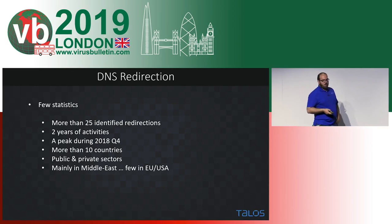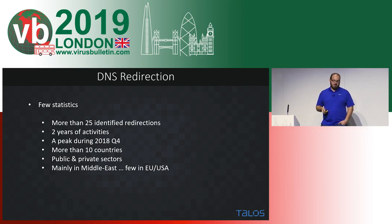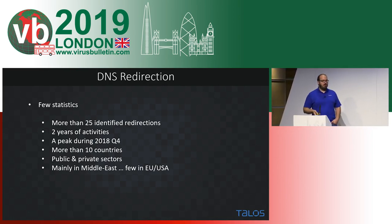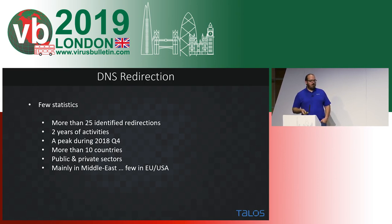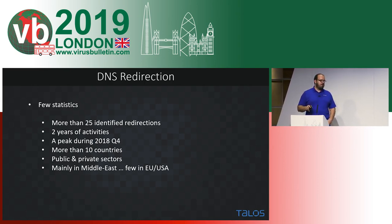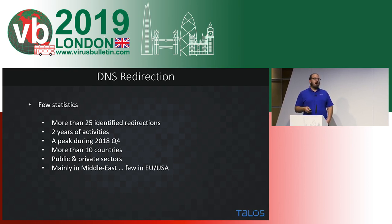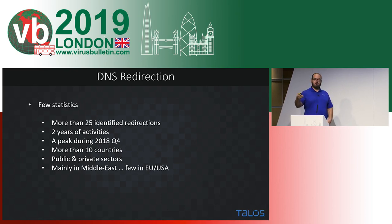We have more than 25 redirections since the beginning of 2017 — two years of activity, with a huge peak at the end of last year when we discovered this. We identified more than 10 countries impacted by the redirection, public and private sector — approximately 95% public and 5% private. Mainly in the Middle East, with a few cases in Europe and the US as secondary targets, ultimately linked back to Middle East objectives.